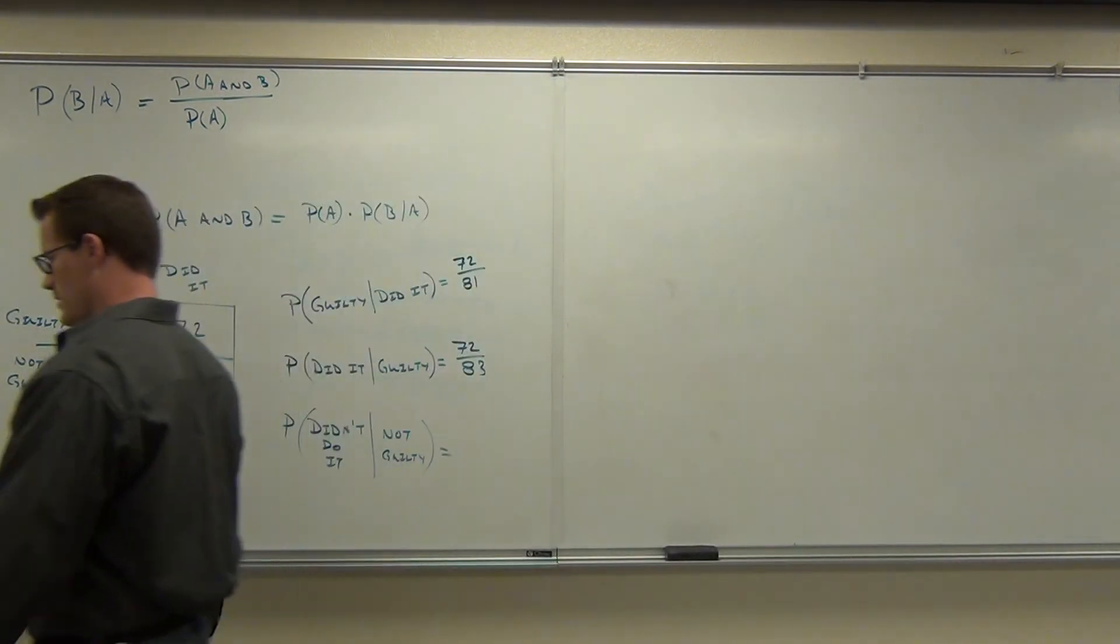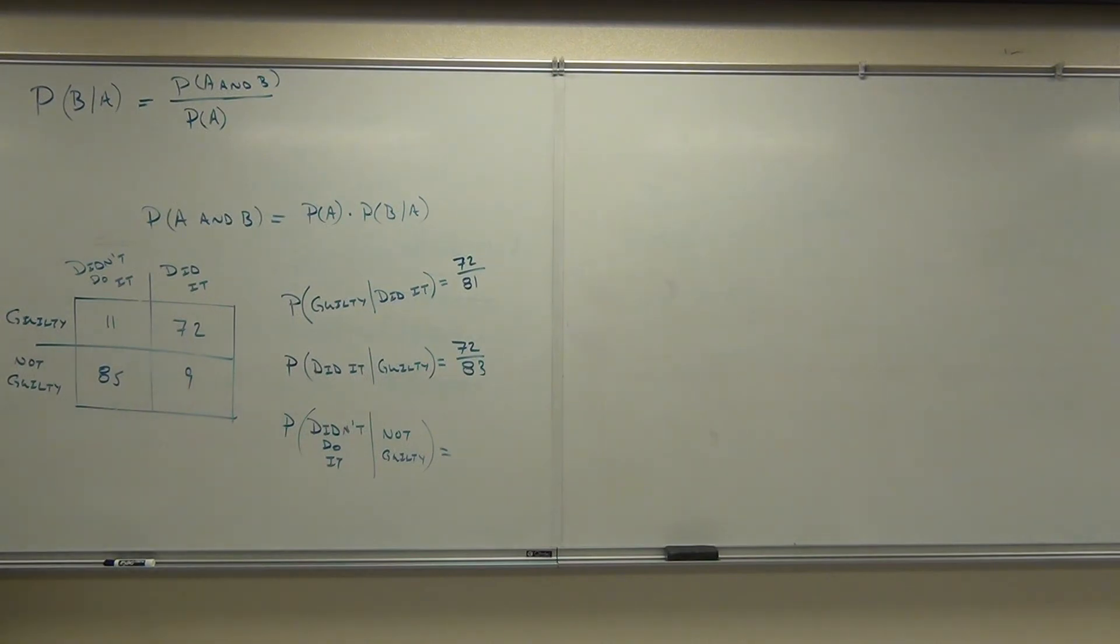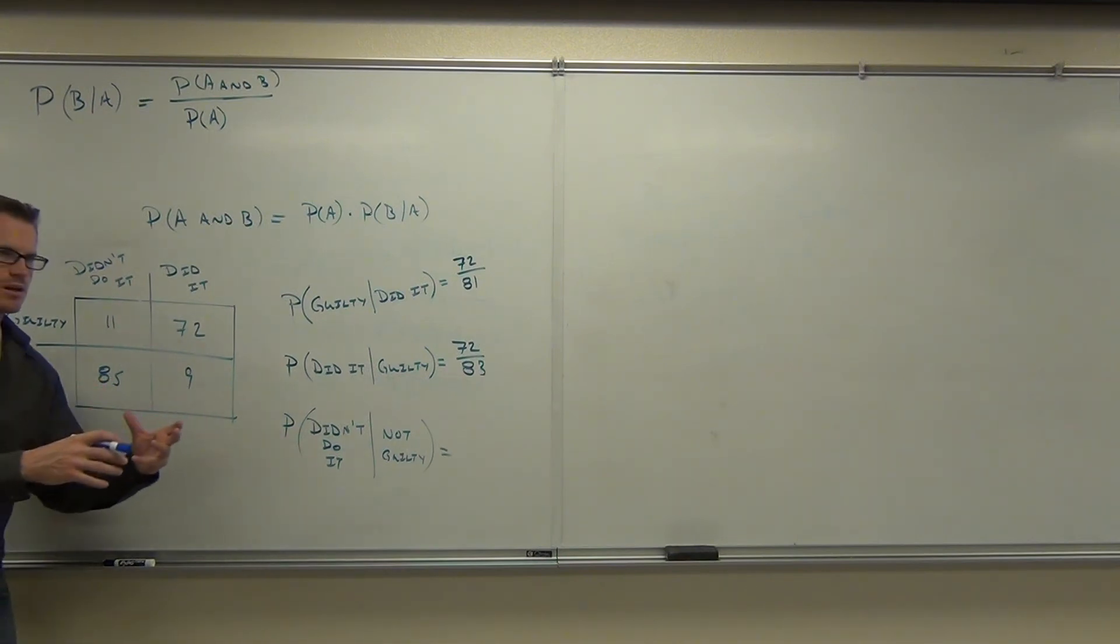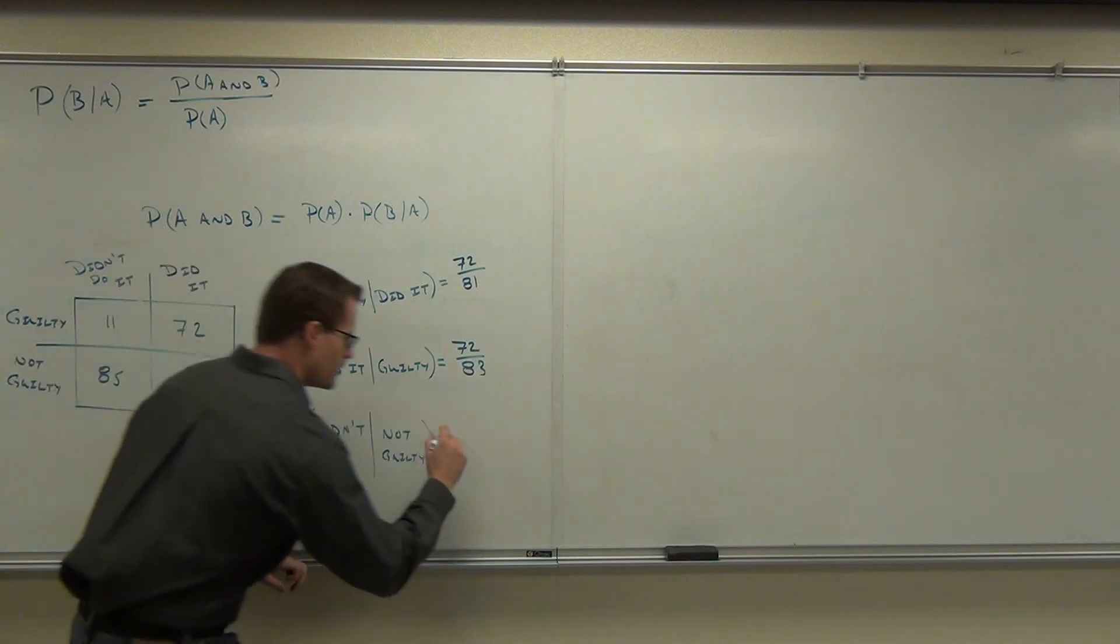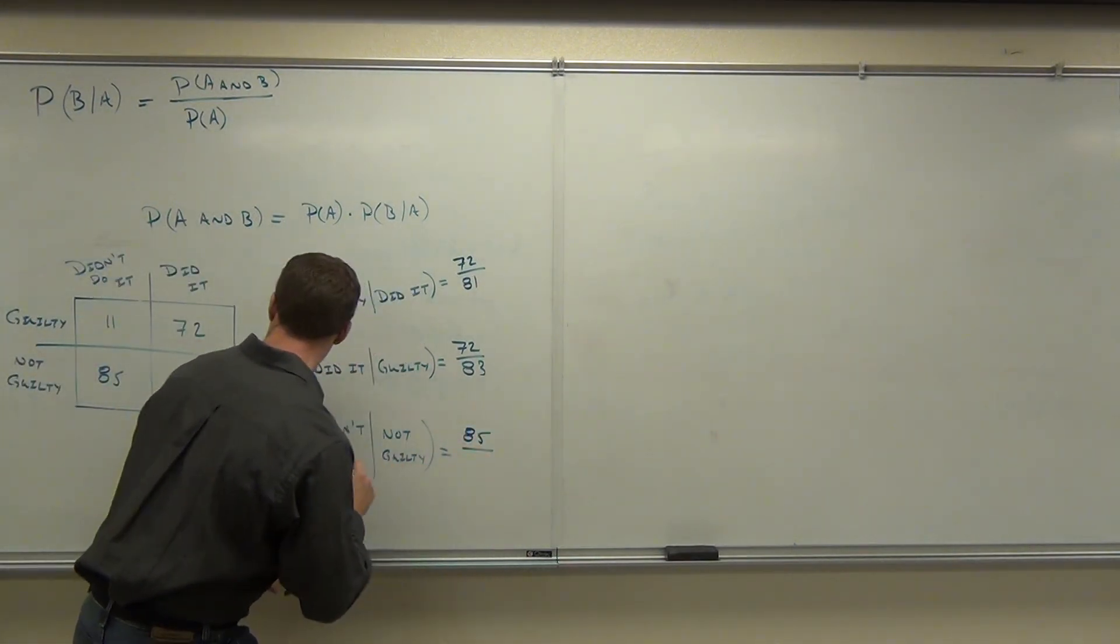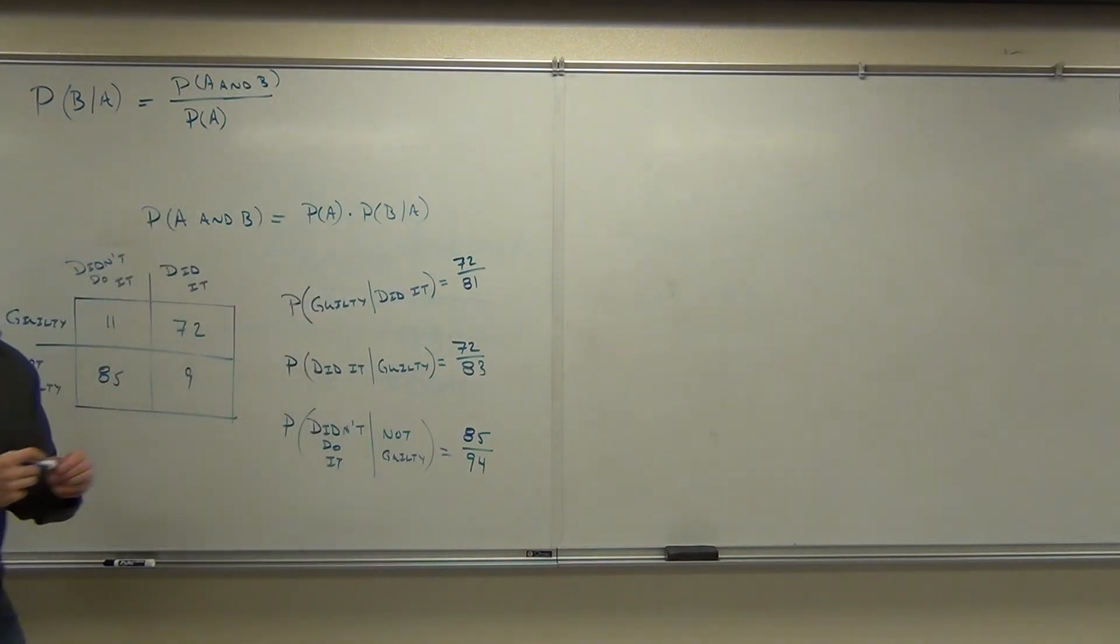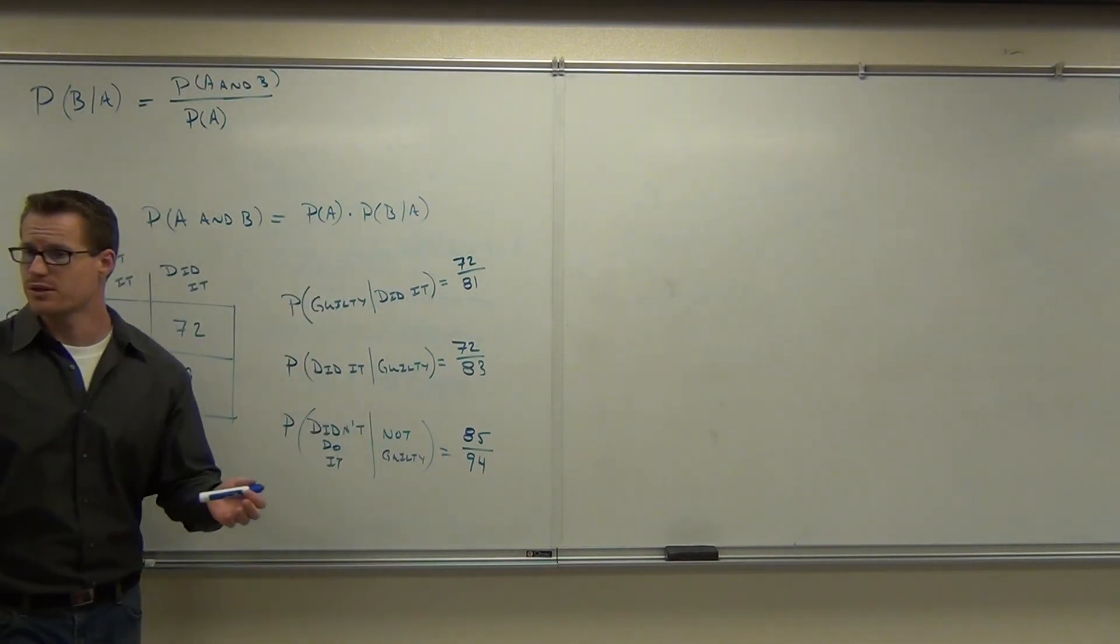Probability they didn't do it given that they're not guilty. How many people didn't do it in that column? How many people didn't do it given that they're not guilty? Given that they're not guilty. So if you're given that someone's not guilty already, should you be looking at the guilty column or guilty row? You should only be looking at the not guilty row. So we're talking about given, not guilty. How many people didn't do it? 85. Good. Out of how many? Perfect. That's your probability. You can find a decimal equivalent for that as well. Just do your division.